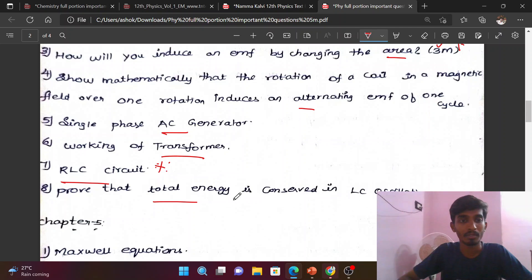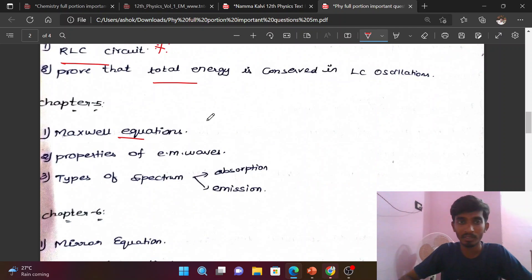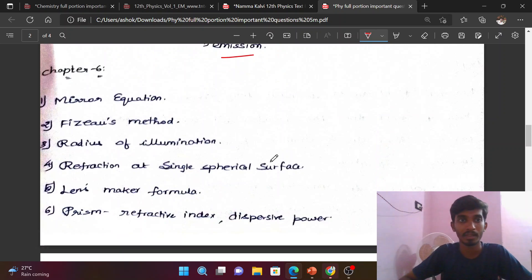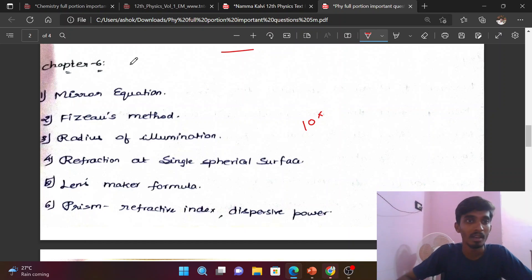Chapter 5: Maxwell equations are very important. Properties of electromagnetic waves, types of spectrum, absorption and emission. These lessons are mostly expected for 5 marks.